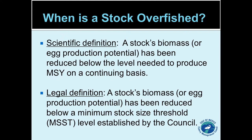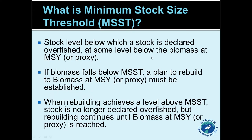Normally we want to keep the stock at or above that MSY level, but we know that stocks fluctuate year-to-year due to natural fluctuations. Under the Magnuson-Stevens Act, we are allowed to let the stock fluctuate a little below that MSY level before it's officially declared overfished. The legal definition of overfished is that the stock's biomass or egg production has been reduced below a minimum stock size threshold established by the council.